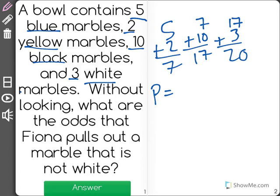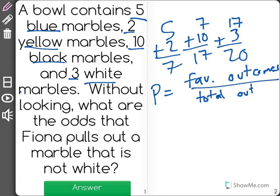So, remember that probability is the number of favorable outcomes, in this case marbles that are not white, over total outcomes. In this case, 20. There are 20 possible outcomes.